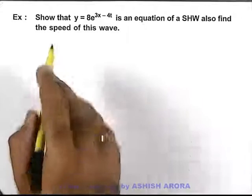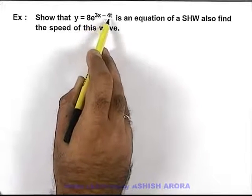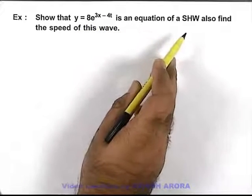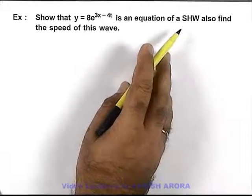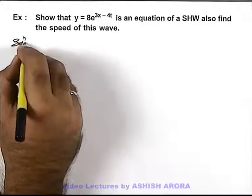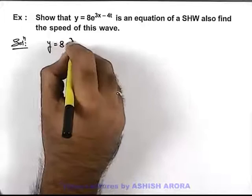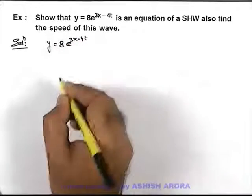In this example, we are required to show that y = 8e^(3x-4t) is an equation of a simple harmonic wave, and also we are required to find the speed of this wave. In this situation, as we are given that y = 8e^(3x-4t).